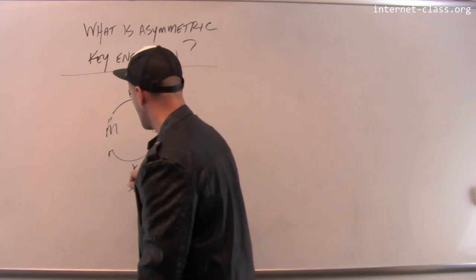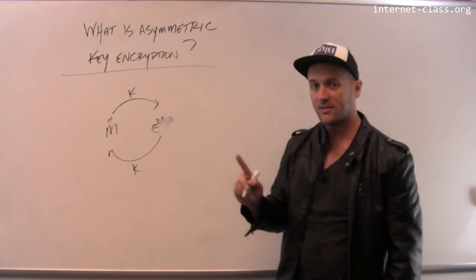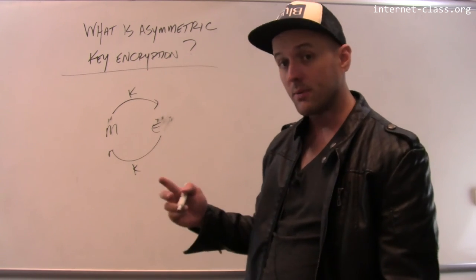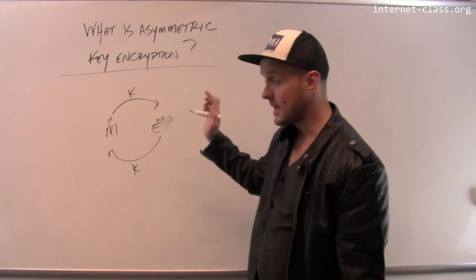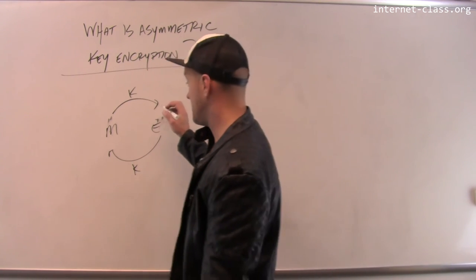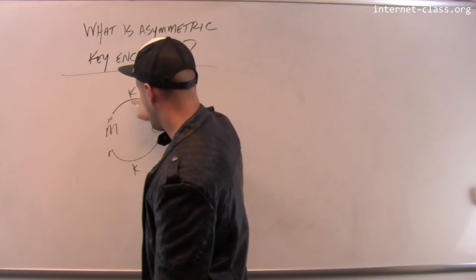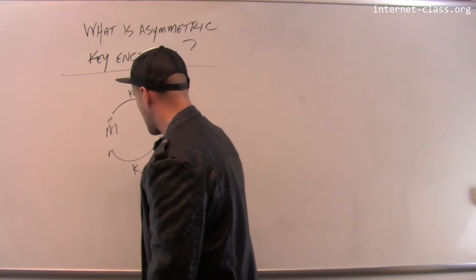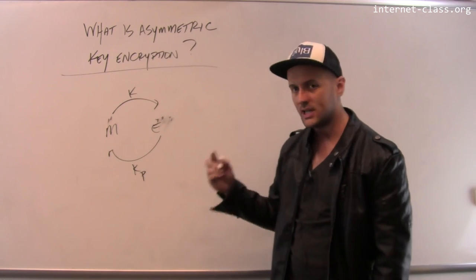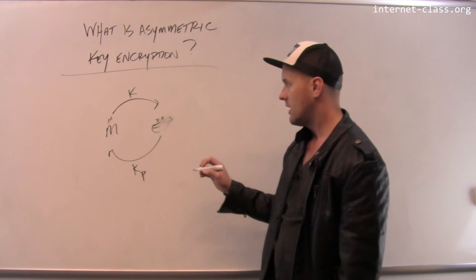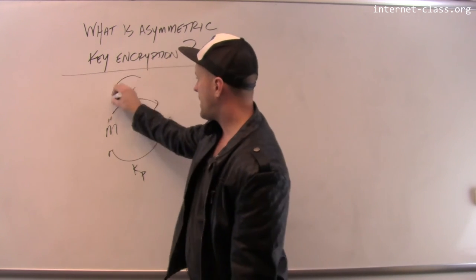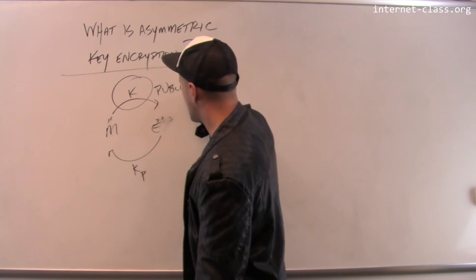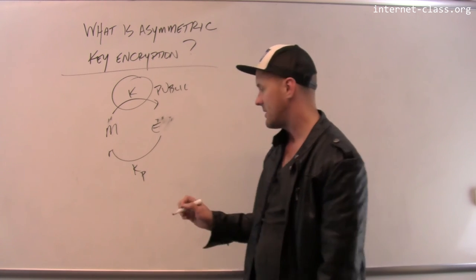Whereas with an asymmetric key encryption system, you use one key to encrypt the messages and a different, private key to decrypt them. This public key is published to everybody — anybody can use it to send you an encrypted message.